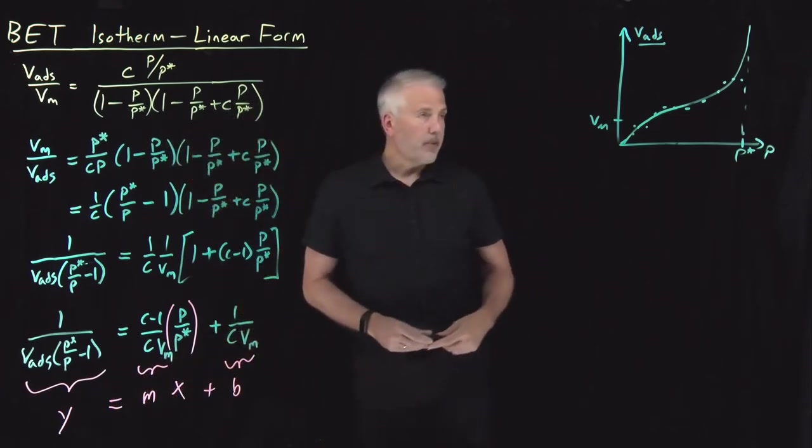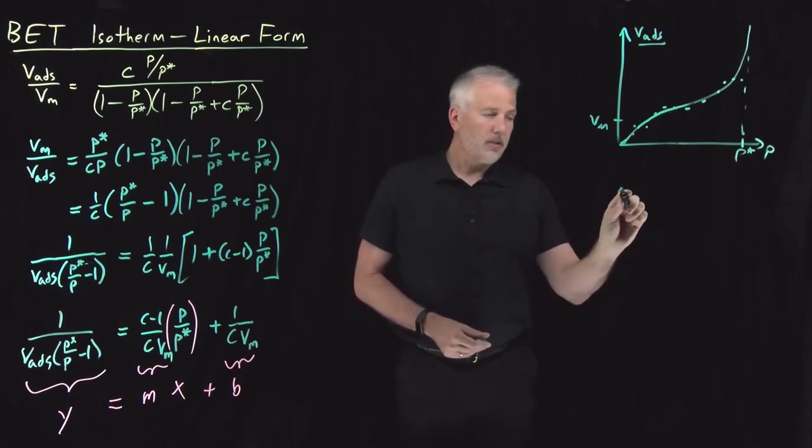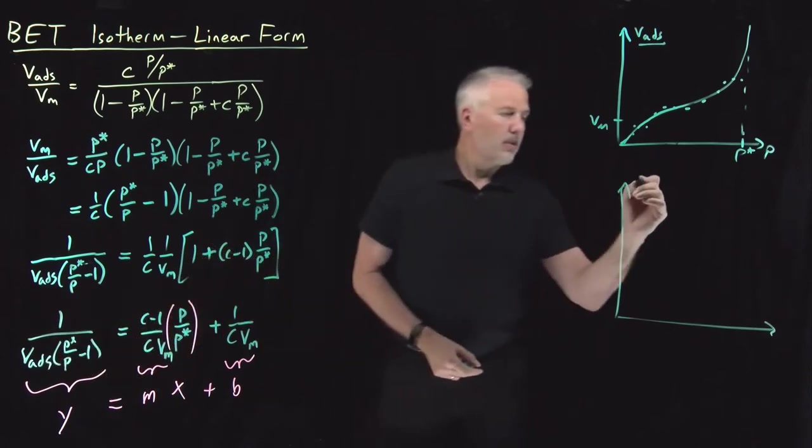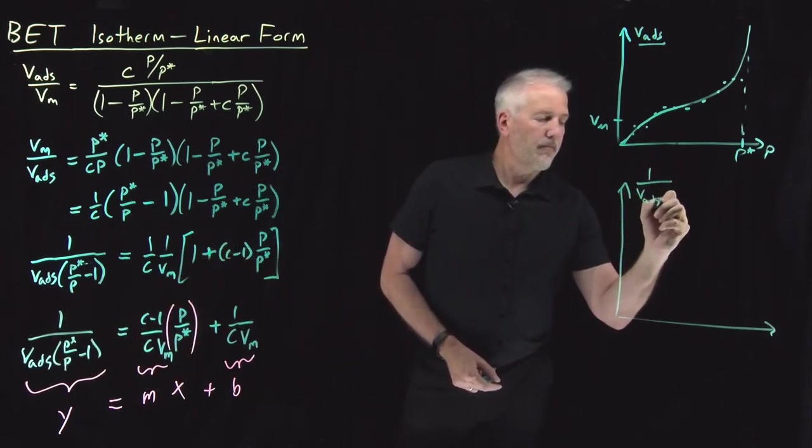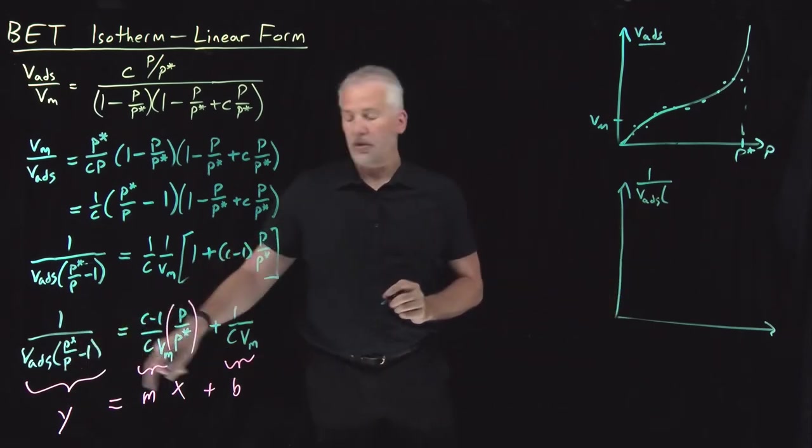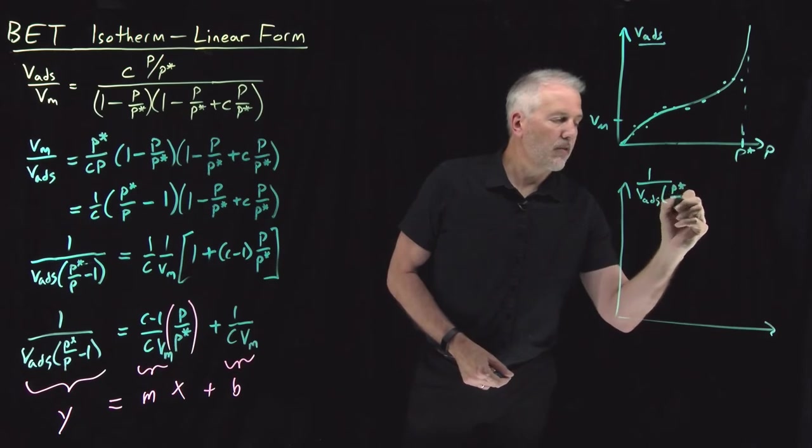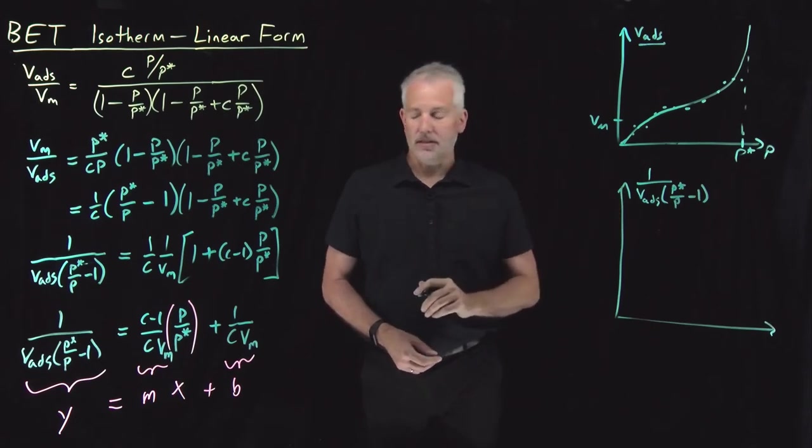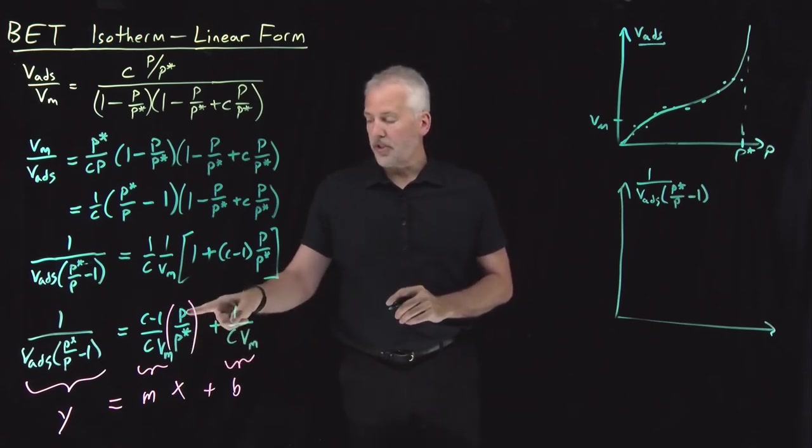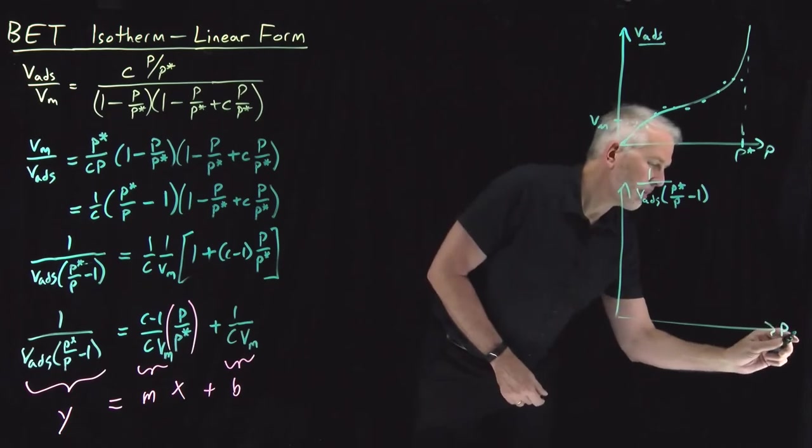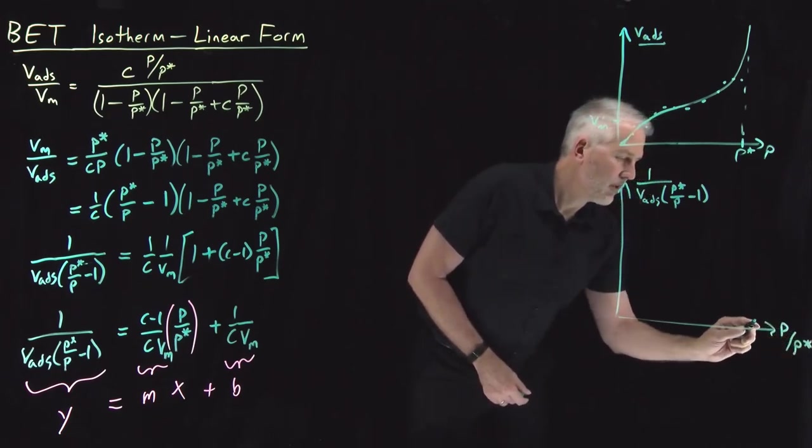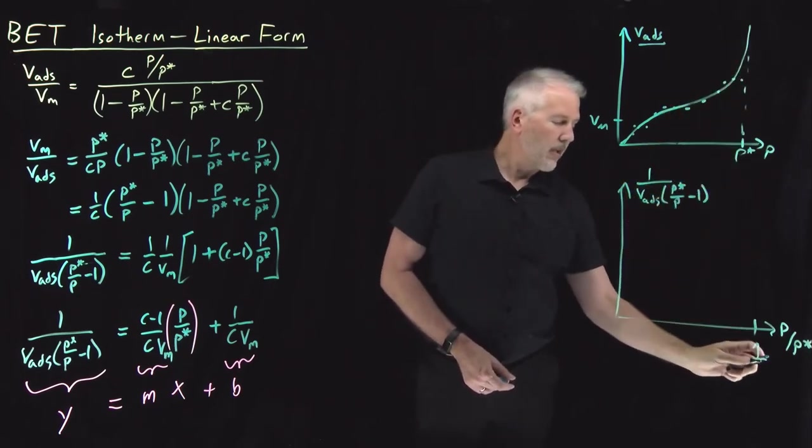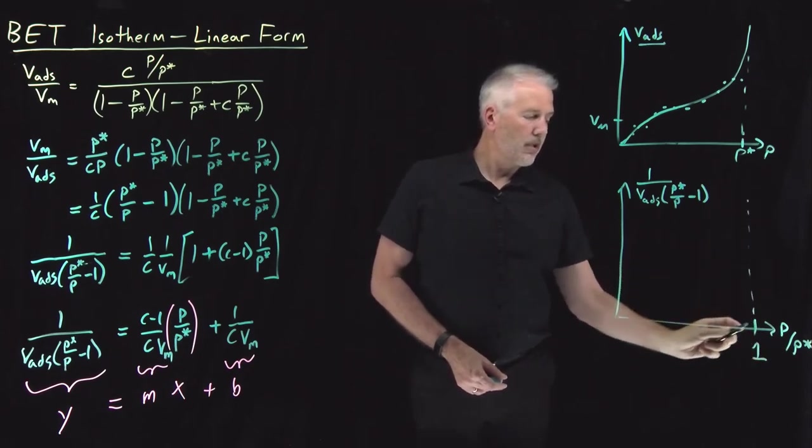So if I plot not adsorbed volume versus pressure, but if instead I plot this beast, 1 over adsorbed volume with this function of the pressure down in the denominator as well, I'll call P star over P minus 1. That's my dependent variable that I'll plot on the y-axis. On the x-axis, I'll plot pressure relative to its vapor pressure. So here I'm plotting P over P star. So instead of this graph blowing up when the pressure reaches the vapor pressure, it's going to blow up when the ratio of the pressure to the vapor pressure reaches 1.